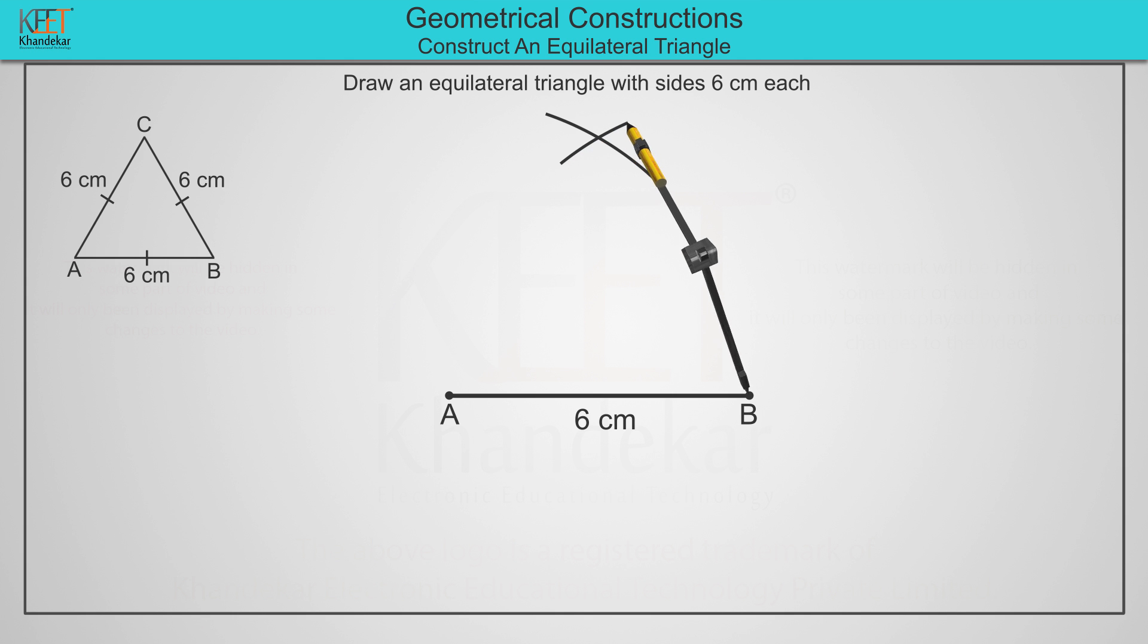cut the previous arc with the same length of 6 cm. Name the point of intersection of the arcs as C.